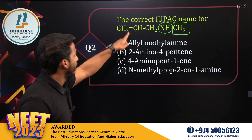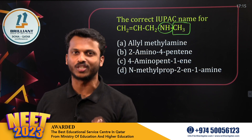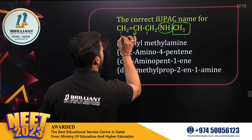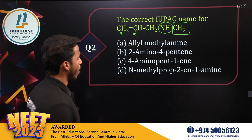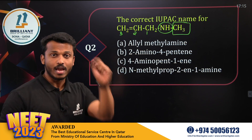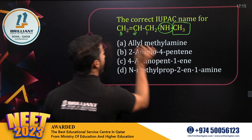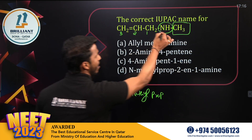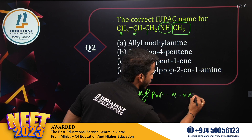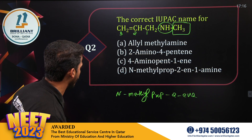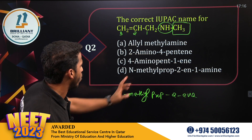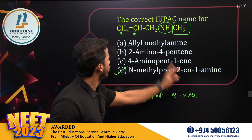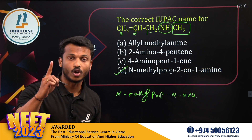Methyl is a branch. There is a double bond and an amine. As per the priority order of functional groups, the amine has the highest priority. So numbering: 1, 2, 3. We select the parent chain with the most priority functional group. Nitrogen is connected to a methyl branch, so the name of the compound is N-methyl prop-2-en-1-amine. The alkene is at the second position and the amine is at the first position. Option D: N-methyl prop-2-en-1-amine. IUPAC nomenclature is very important.